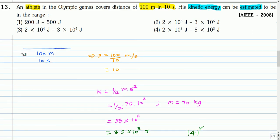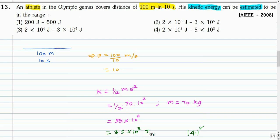The athlete covers 100 m in 10 s. Assuming constant speed, v = 100/10 = 10 m/s. The kinetic energy is estimated as (1/2)mv², taking mass ≈ 70 kg. This gives KE ≈ 3.5 × 10³ joules, which is of order 10³. So the correct option is option 4.